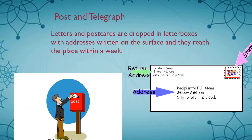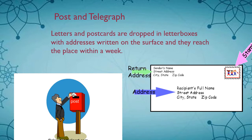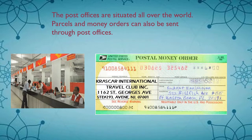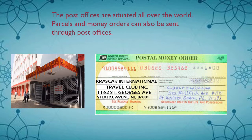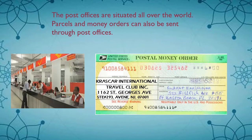Now let's learn about post and telegraph. Letters and postcards are dropped in letter boxes with addresses written on them. The sender's name and address and the receiver's name and address will be written on the surface along with the stamp. These letters will usually reach the receiver's address within a week. We have post offices situated all over the world, and parcels and money orders can also be sent through these post offices.